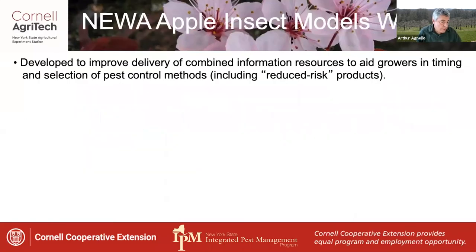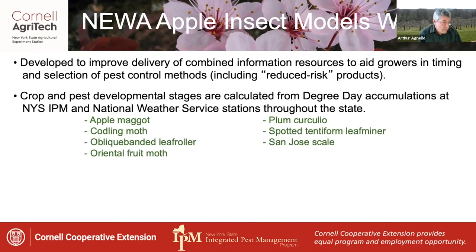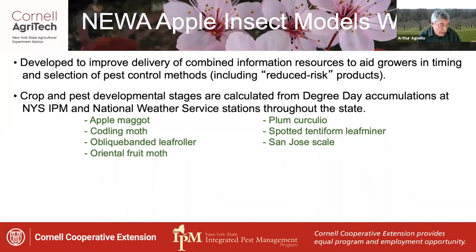A number of years ago, we worked to create an apple insect models website within the NUA platform. This was developed to improve the delivery of different types of information resources to help growers time and select their pest control methods, including the use of reduced-risk products, which tend to be a little more information sensitive. This information was essentially already available online in various places, but this website was created to bring it all together in a more accessible form. It works by calculating crop and pest developmental stages from degree day accumulations — temperature data at New York State IPM and National Weather Service stations throughout the state.